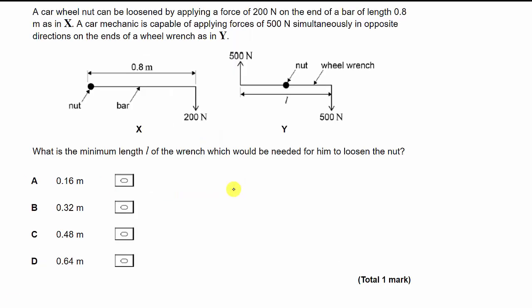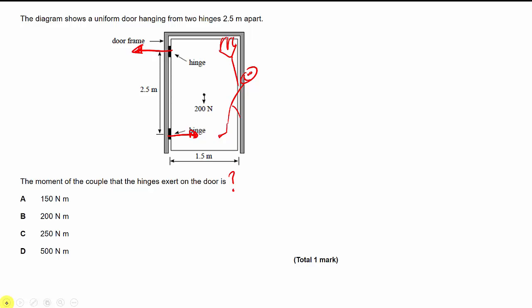It says that the moment of the couple that the hinges exert on the door is, question mark. Well, the weight of the door acting directly down here is turning this whole thing this way, which is clockwise, and then you've got, you must have, if this thing is in equilibrium, an anticlockwise moment to balance it. And that moment is being provided by the hinges. So the pure torque being provided by the hinges must be the same as whatever the torque being provided by the weight of the door acting from its center of mass is.